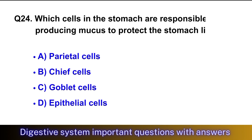Question No. 24: Which cells in the stomach are responsible for producing mucus to protect the stomach lining? The right option is option C, goblet cells.